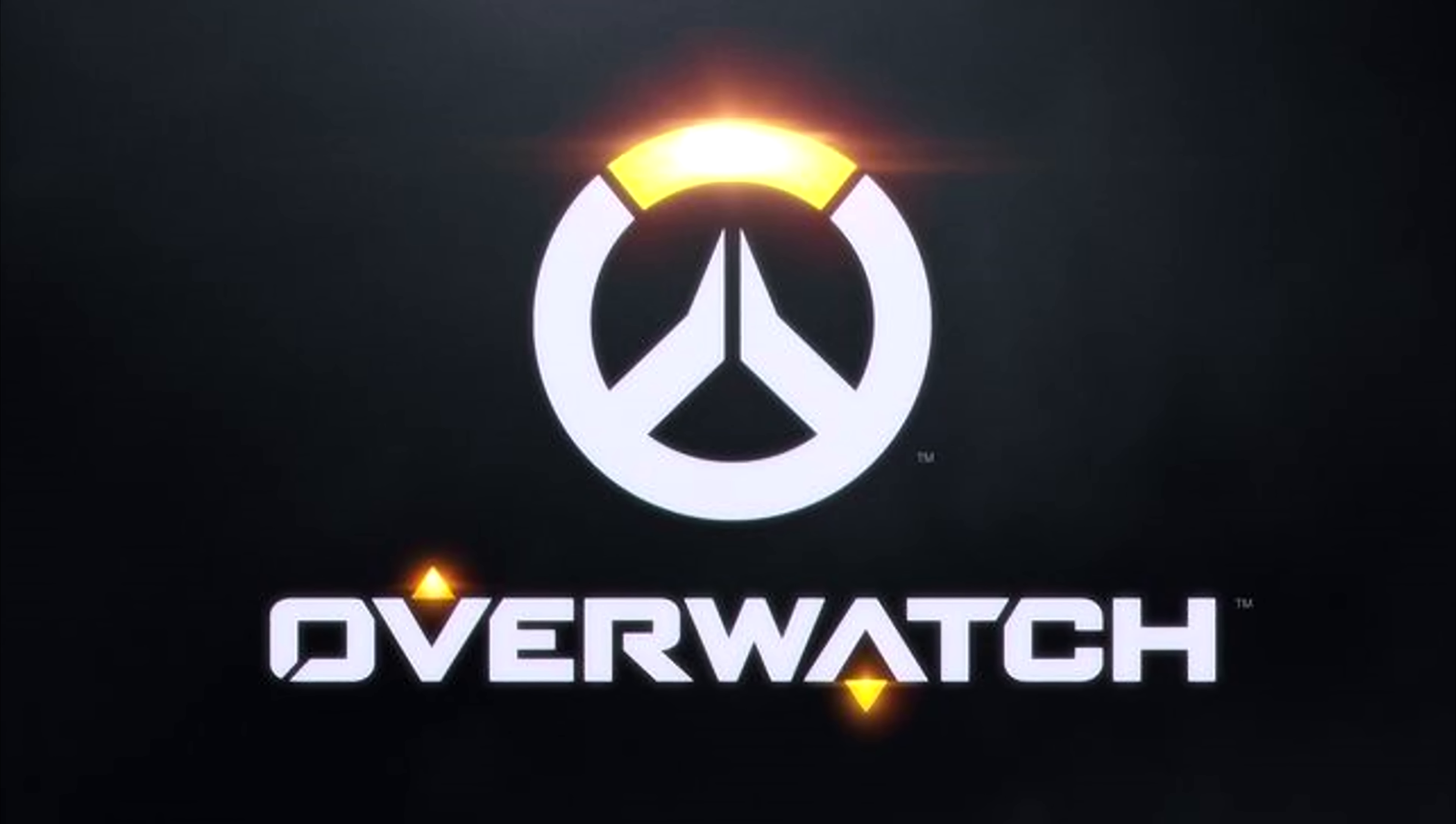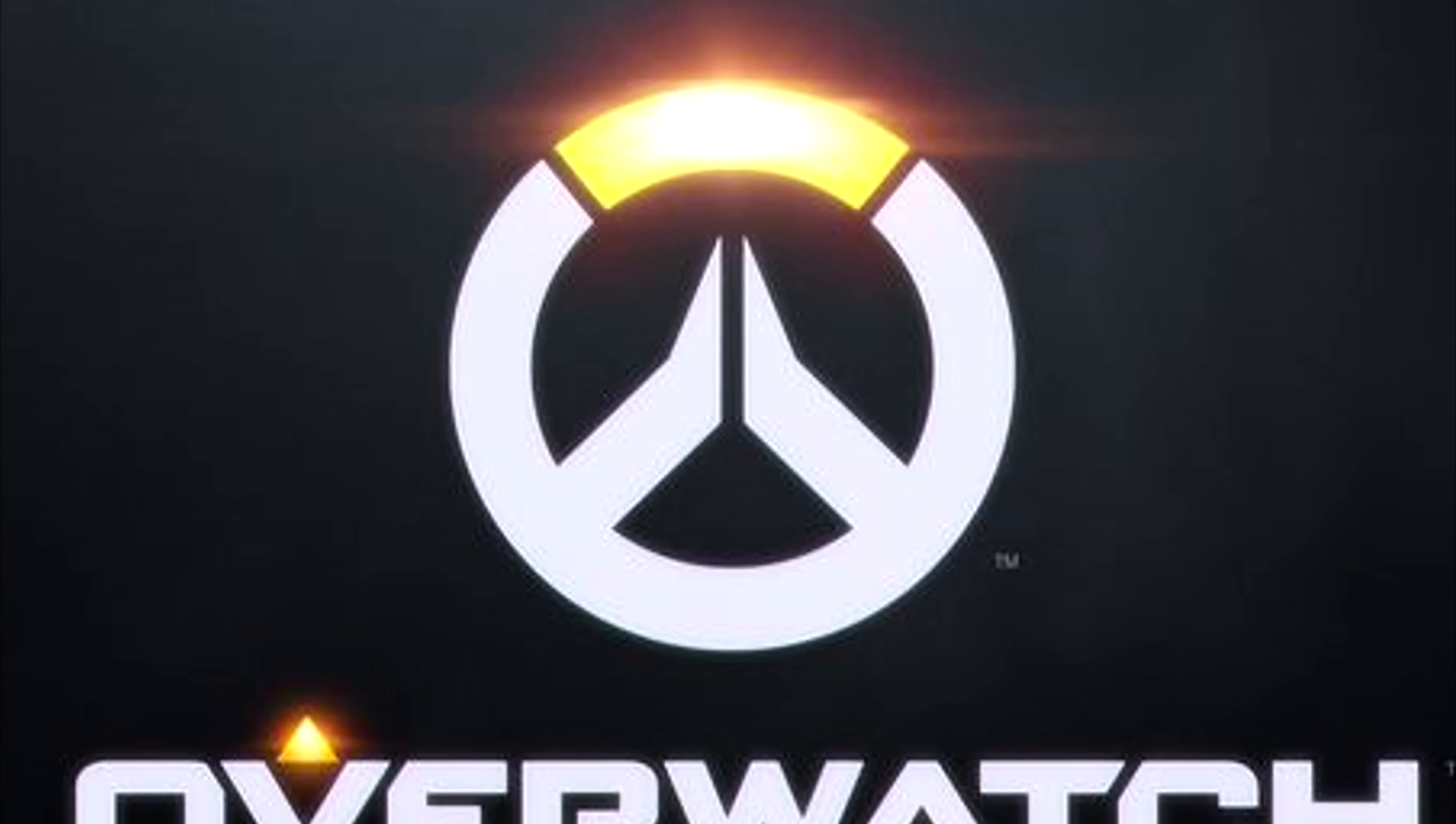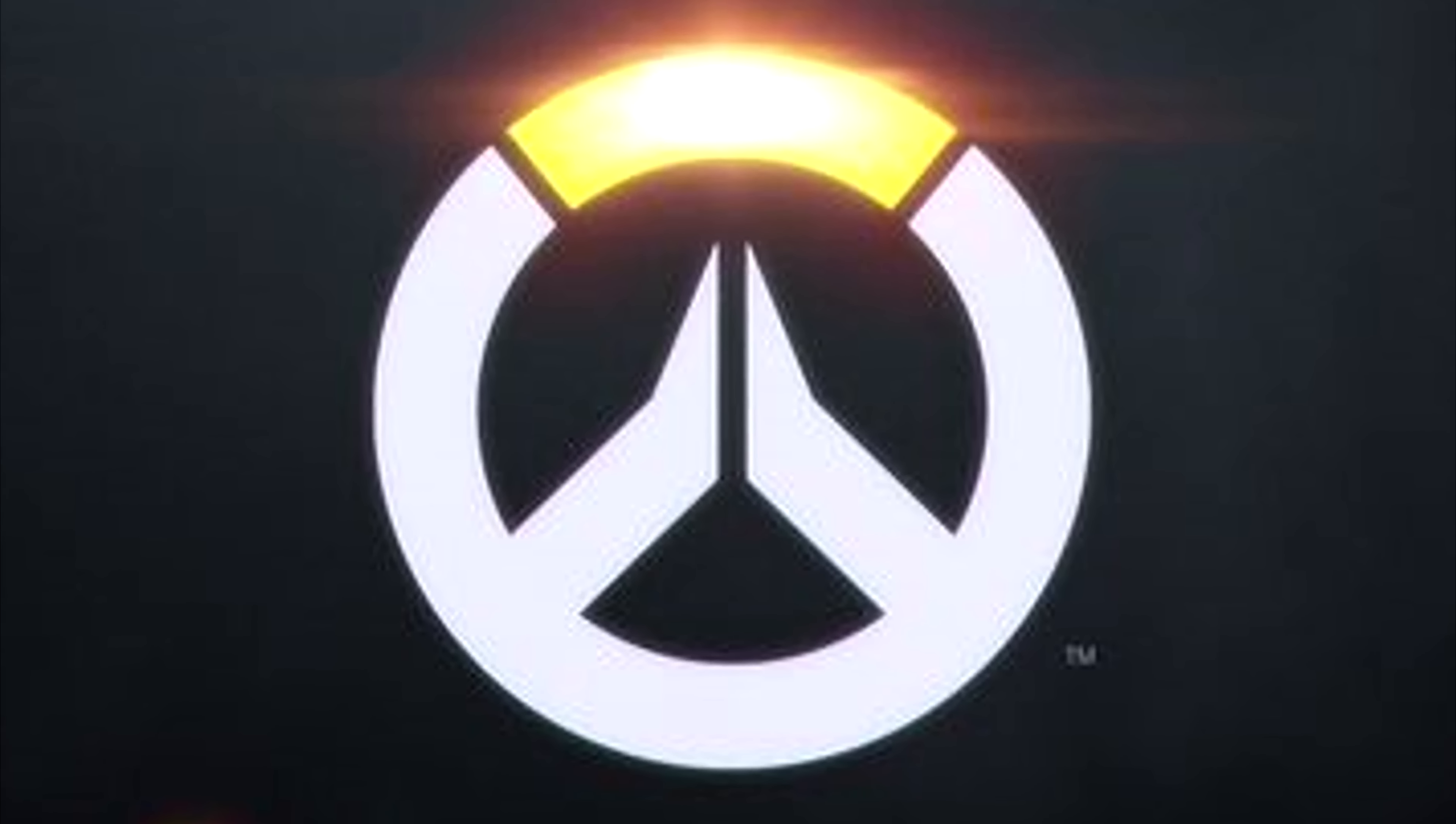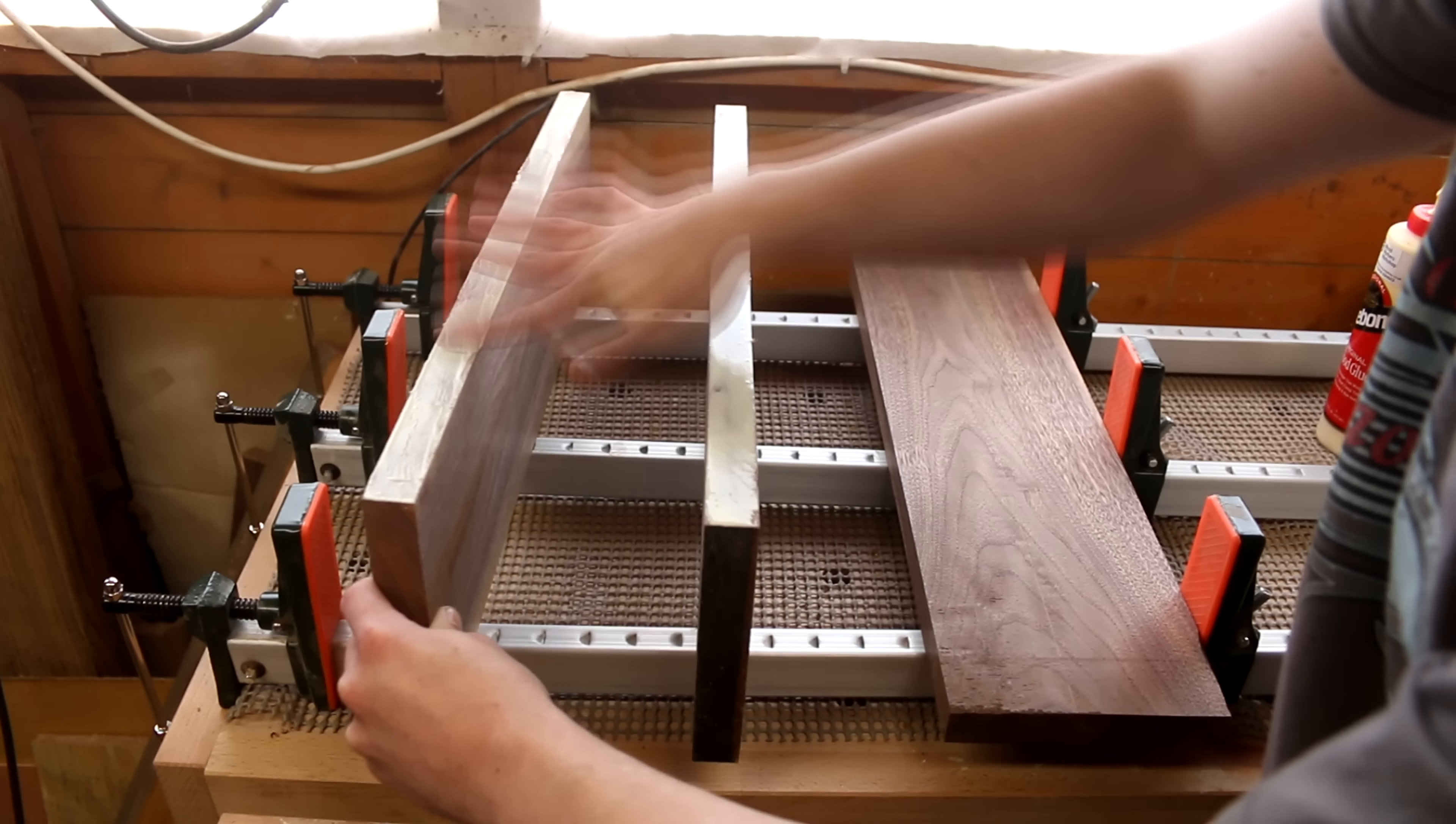I've been playing a lot of Overwatch recently and I thought that the logo was perfect for a wall light, so I had to have a go at making one. I decided to make mine out of walnut because that's what I already had on hand.